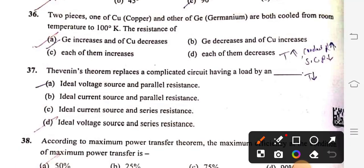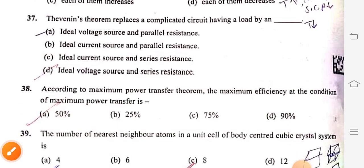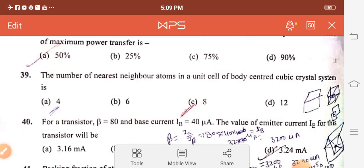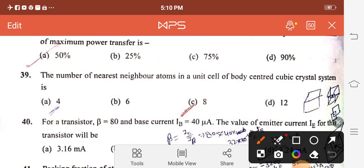Question 37: Thevenin theorem replaces a complicated circuit having a load by an ideal voltage source and series resistance, option D. Question 38: According to maximum power transfer theorem, the maximum efficiency at the condition of maximum power transfer is 50%, option A.